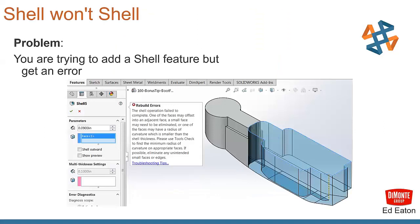The next thing that we've got here is our shell that won't shell. So the problem is we're trying to add a shell feature, but we get an error with this. This particular problem, you can see in the lower right corner, this comes from Ed Eaton of the DeMonte Group, one of our customers who we've worked with for a long time here. When we go to create the shell, we get this rebuild there. And you can see in the lower right corner of that image that it's highlighting one edge for us, something about a face being too small.